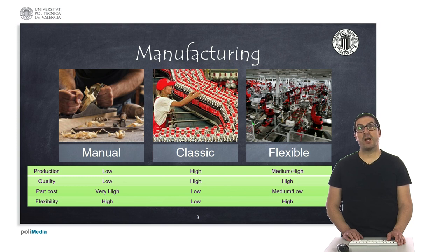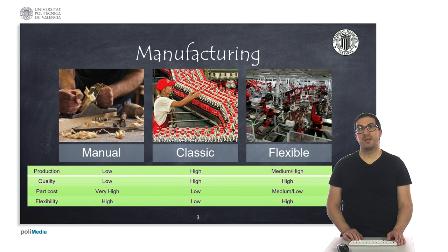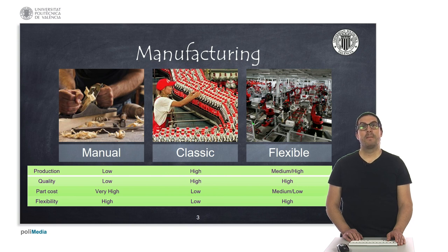Manual manufacturing processes are carried out by human operators and are assisted by machinery which is manually controlled. Their production is low and the quality is generally low, but in exchange there is great flexibility in adapting the production, though at a very high cost per part. Classic manufacturing, using specialized machinery for mass production, generally has the highest production and product quality, but its flexibility to adapt to changes in production is generally low, achieving a low production cost per part.